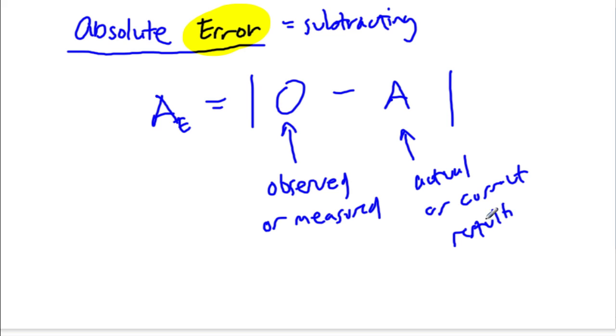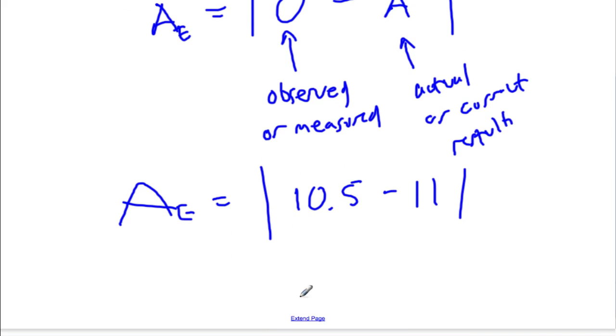So for example, let's find the absolute error. If you measured a piece of paper to be 10.5 inches in its height, but the actual measurement is 11 inches, what's your absolute error? Well, an absolute error then would be 10.5 minus 11, which is negative 0.5. We take the absolute value of that, so your absolute error is 0.5 of an inch.